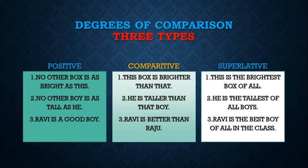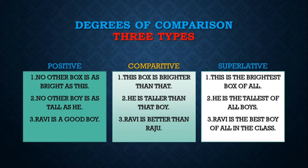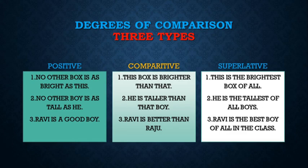In the comparative you add -er to the adjective; in the superlative -est is added. For example: no other boy is as tall as he (positive); he is taller than that boy (comparative); he is the tallest of all boys (superlative). Similarly, Ravi is a good boy; Ravi is better than Raju; Ravi is the best boy of all in the class.